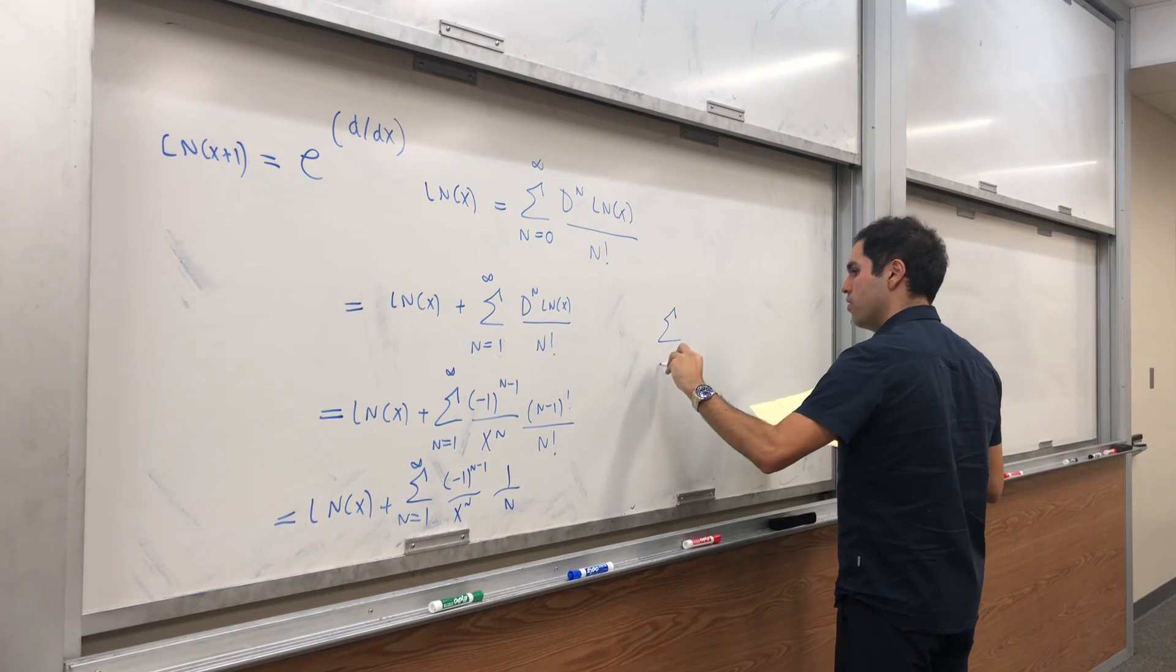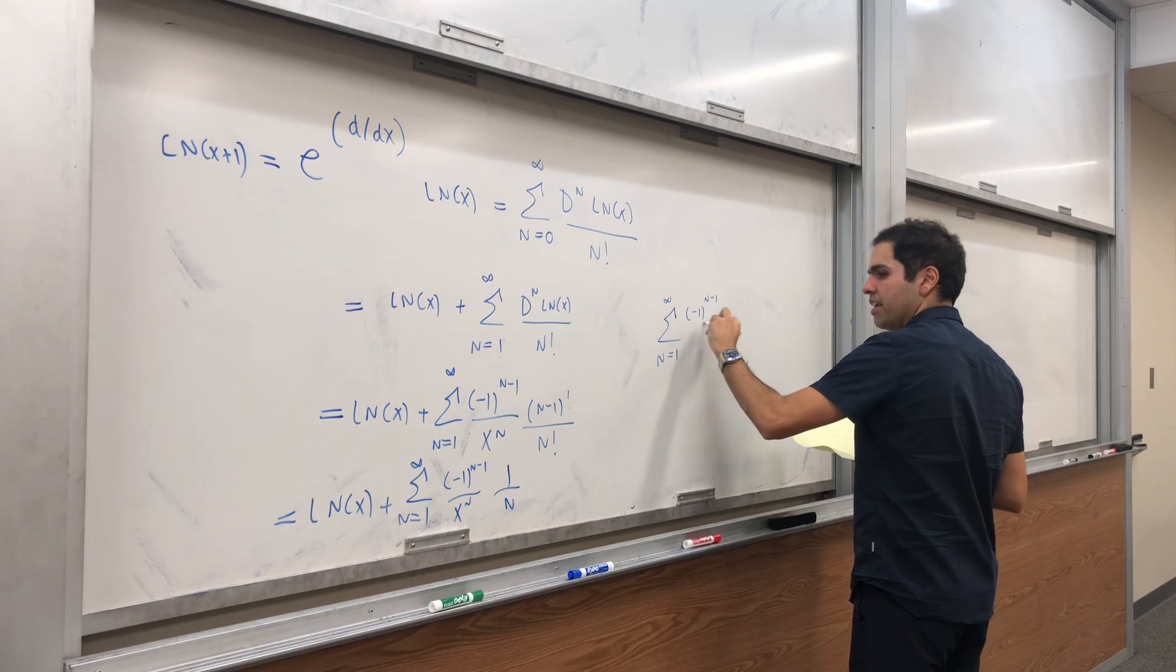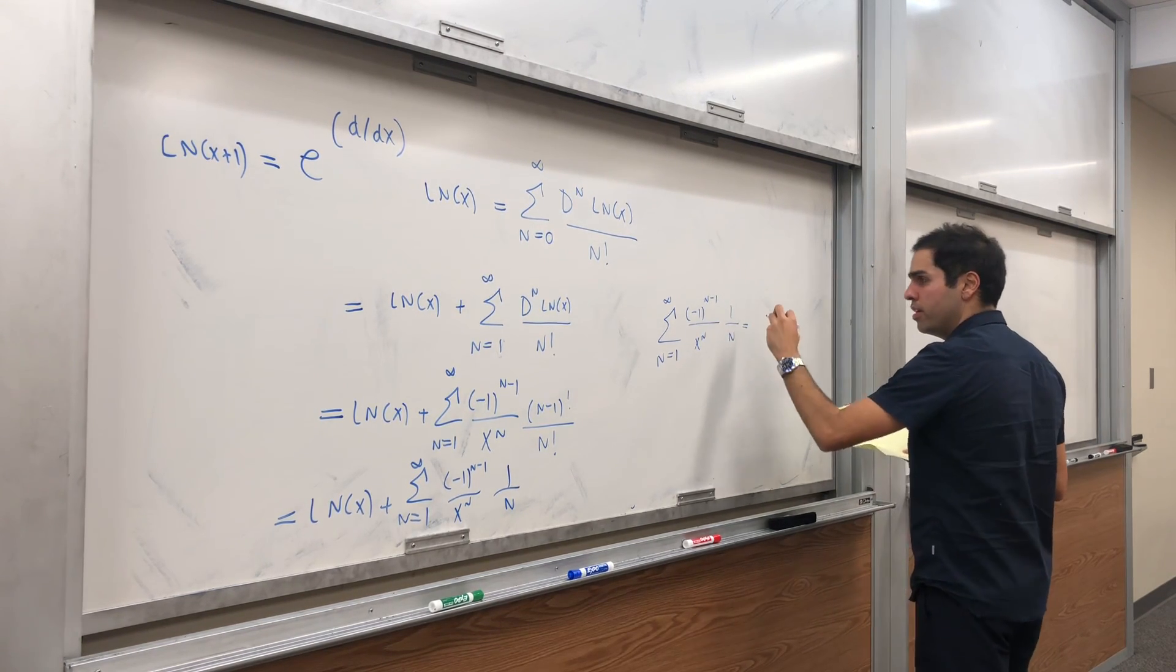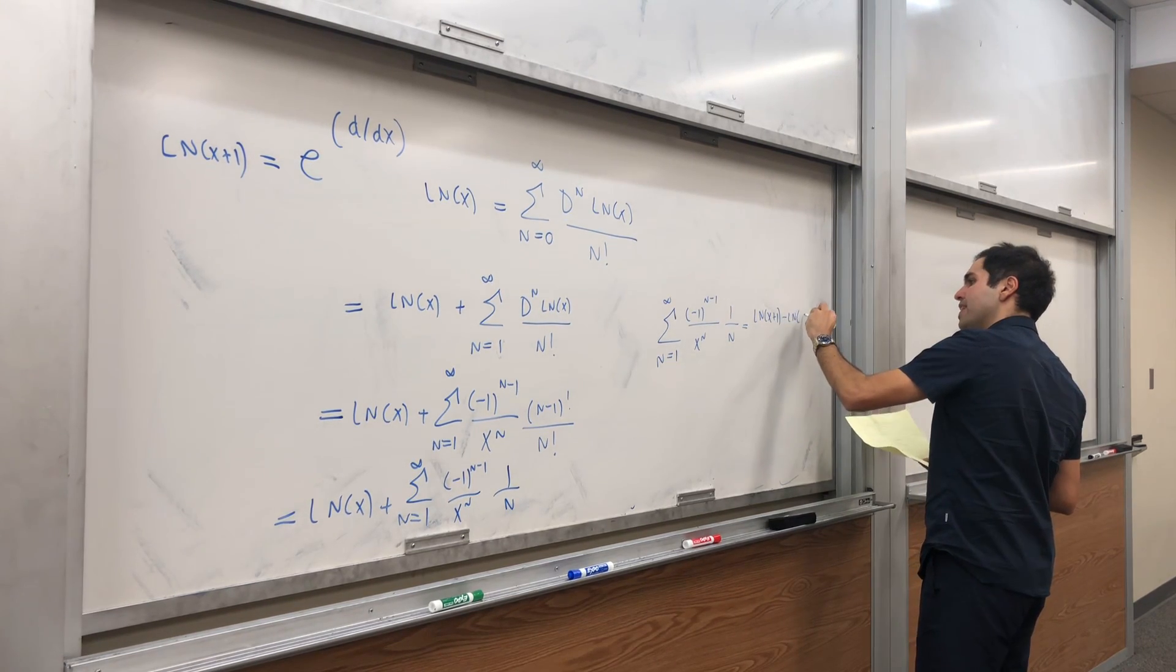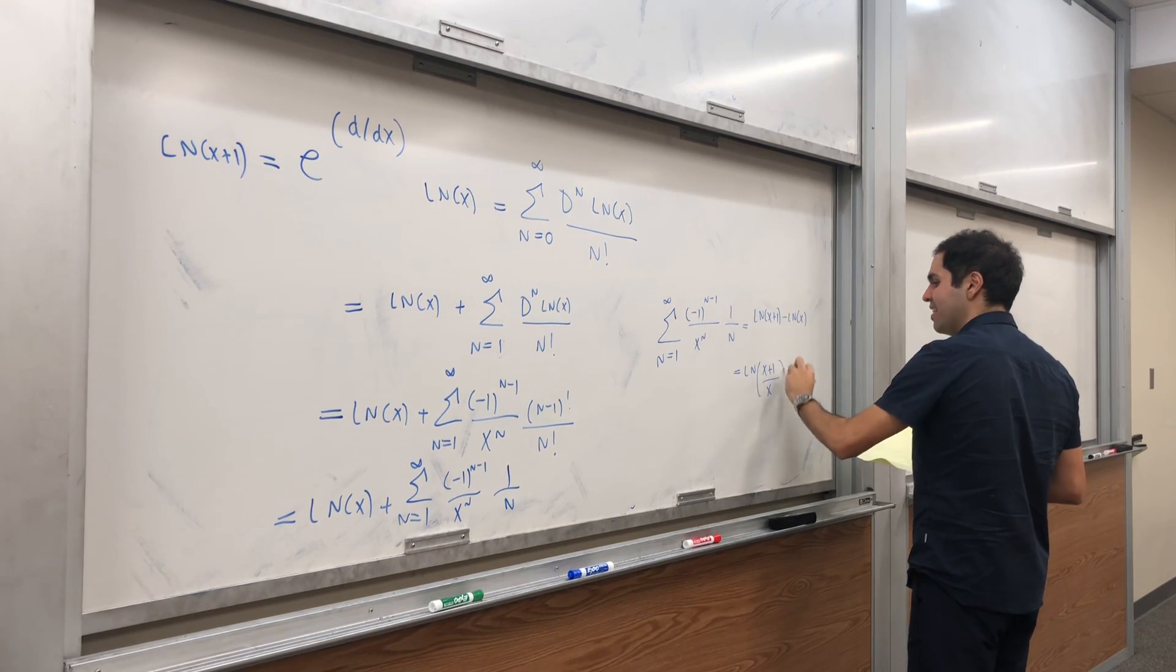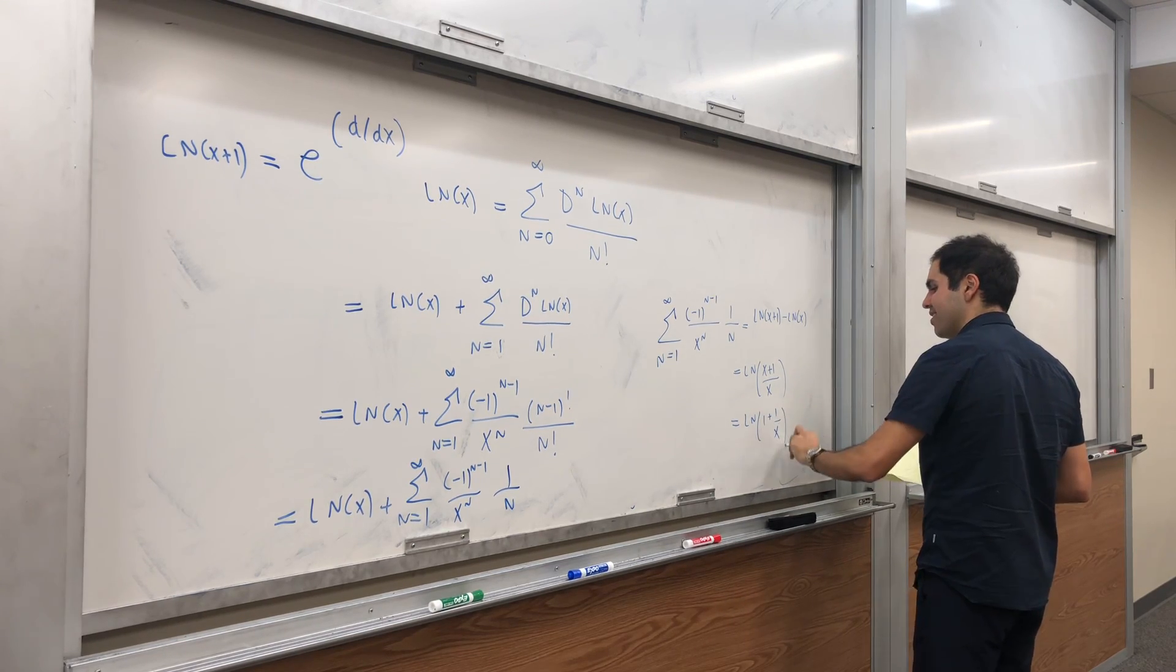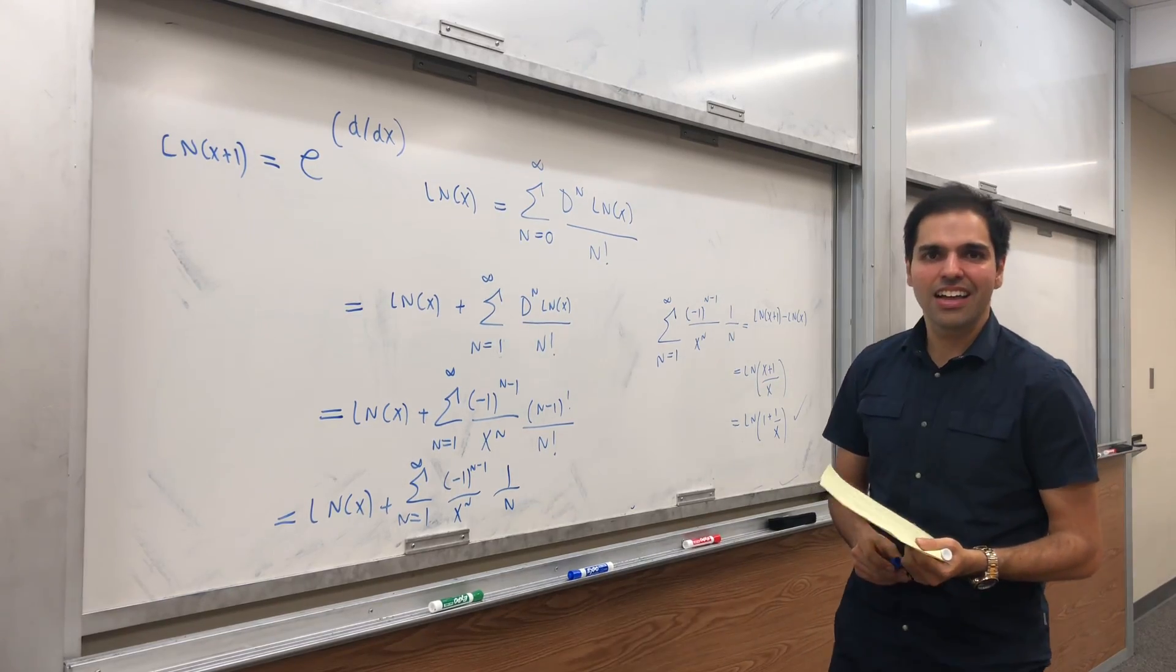So the sum from n = 1 to infinity of (-1)^(n-1) over n times 1 over x to the n is ln(x + 1) minus ln(x), which you can write as ln of (x + 1)/x, which is precisely what agrees with calculus.